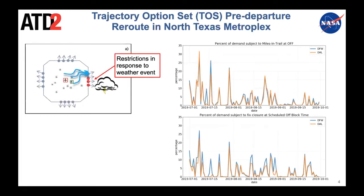The main problem we're trying to solve is illustrated on the left hand side. Each aircraft shown really represents an airport. Multiple airports share common resources: the departure fixes along the terminal boundary. In North Texas, we have 16 departure fixes broken into four departure gates of four fixes each — a north gate, south gate, east gate, and west gate. Weather can roll into the Metroplex environment, and in response, air traffic control puts restrictions on the system such as fix closures.